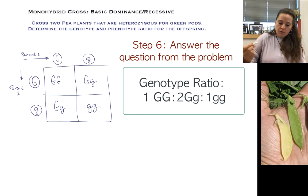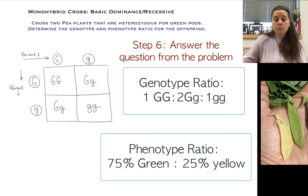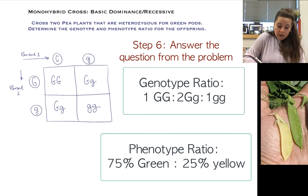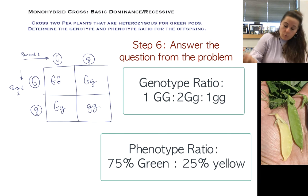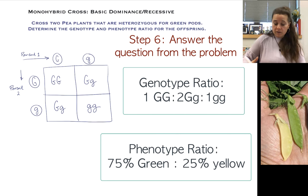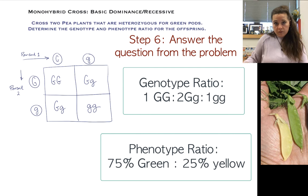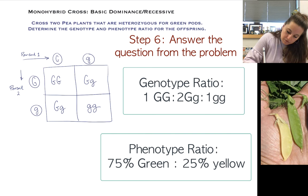The phenotype ratio is what the offspring will actually look like — the physical expression of the traits. Three out of four offspring carry the dominant allele, so 75% or three-fourths of those plants should be green. Only one out of four is homozygous recessive, and since both alleles are recessive, those plants will show yellow. Remember, these are probabilities — every fertilization event is independent, so each offspring has the same chances.